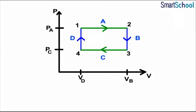As you can see in the graph that the system from state 1 goes to state 2, then to state 3 and 4, and finally returns to the initial state 1.